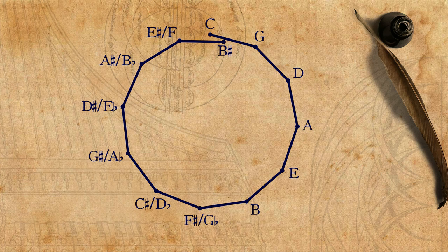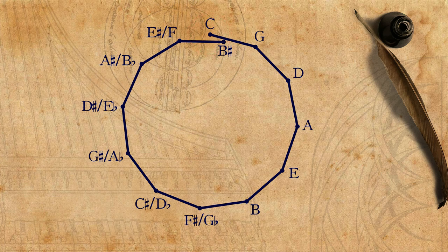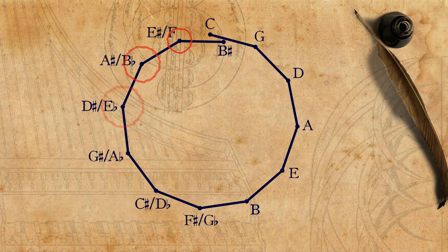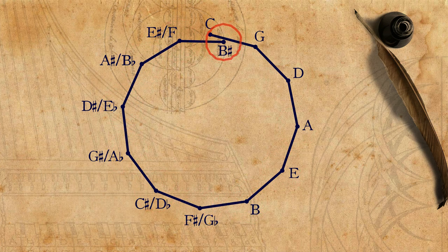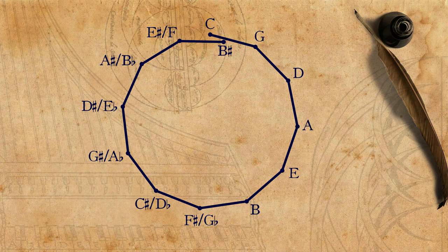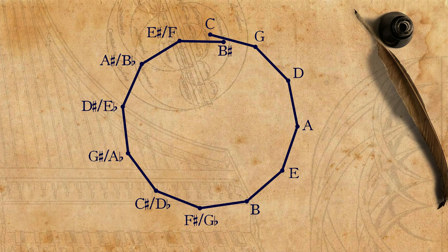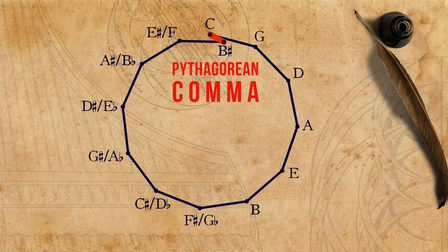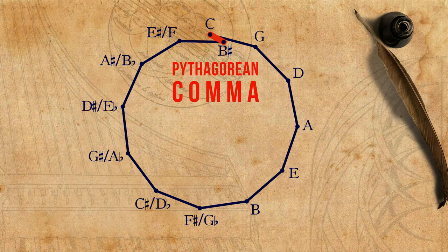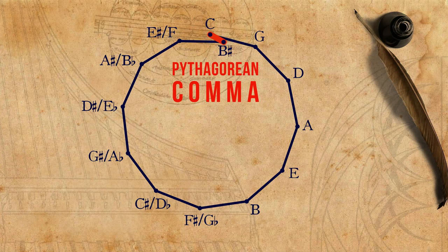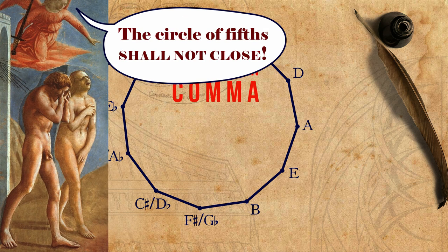For example, if we start from C and then go up 11 pure fifths, we'll end up with a B-sharp, which is not at all equivalent to our initial C. It is higher by an interval called the Pythagorean comma. Here is where we started, and here we landed. This might seem a bit weird, as it would be nice to believe that nature obeys the circle of fifths, but this is not the case, and we have to deal with it.